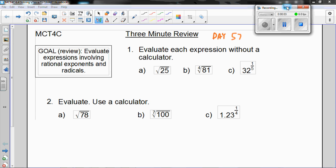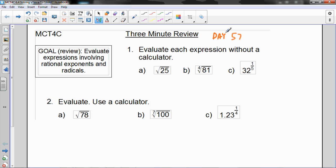Okay, MCT4C, day 57. Welcome to day 57. The lesson is 6.3, solving polynomial equations that have a specific form, and we'll get to that in a bit. The goal today for the 3-minute review is to evaluate expressions involving rational exponents and radicals, so this is a bit of a review of unit 4, I guess.